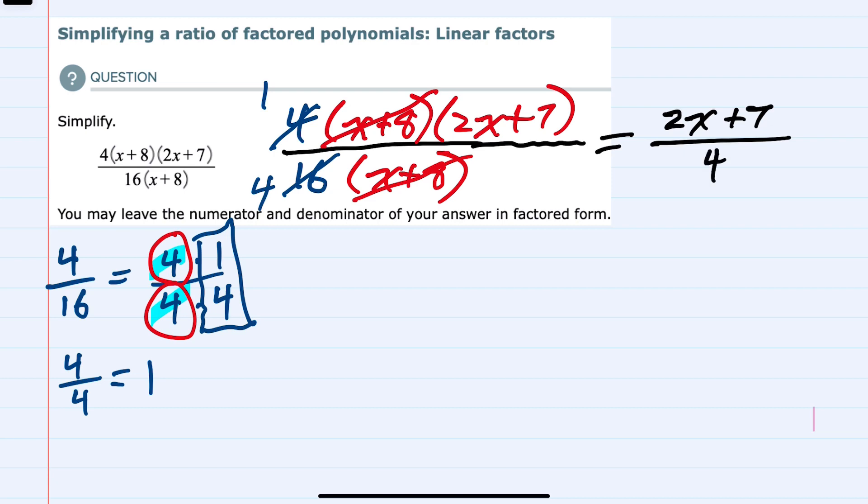If you're tempted to try to reduce this, canceling the 2 and the 4, keep in mind that we can only cancel with factors. Whenever we have multiplying, we can't cancel individual terms unless we could factor something out of the top.